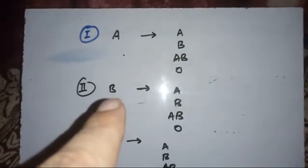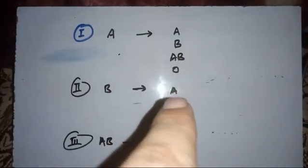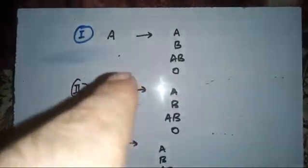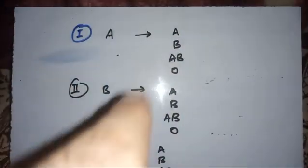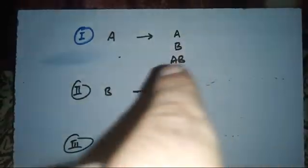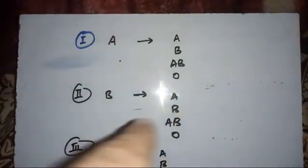A has A antigen, but O has no antigen, so O has antibodies against both A and B. Therefore there will be a transfusion reaction when transfusing A to O.